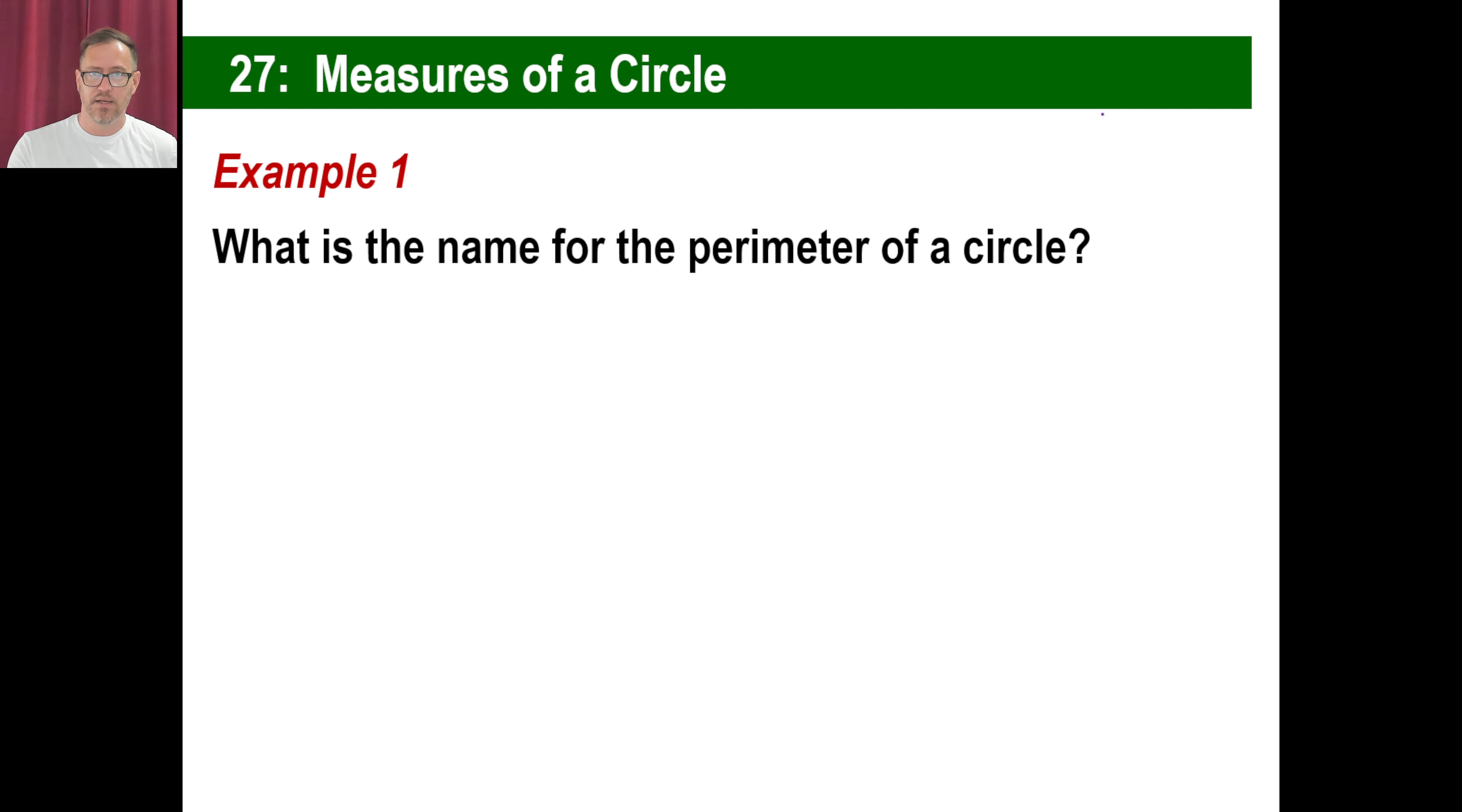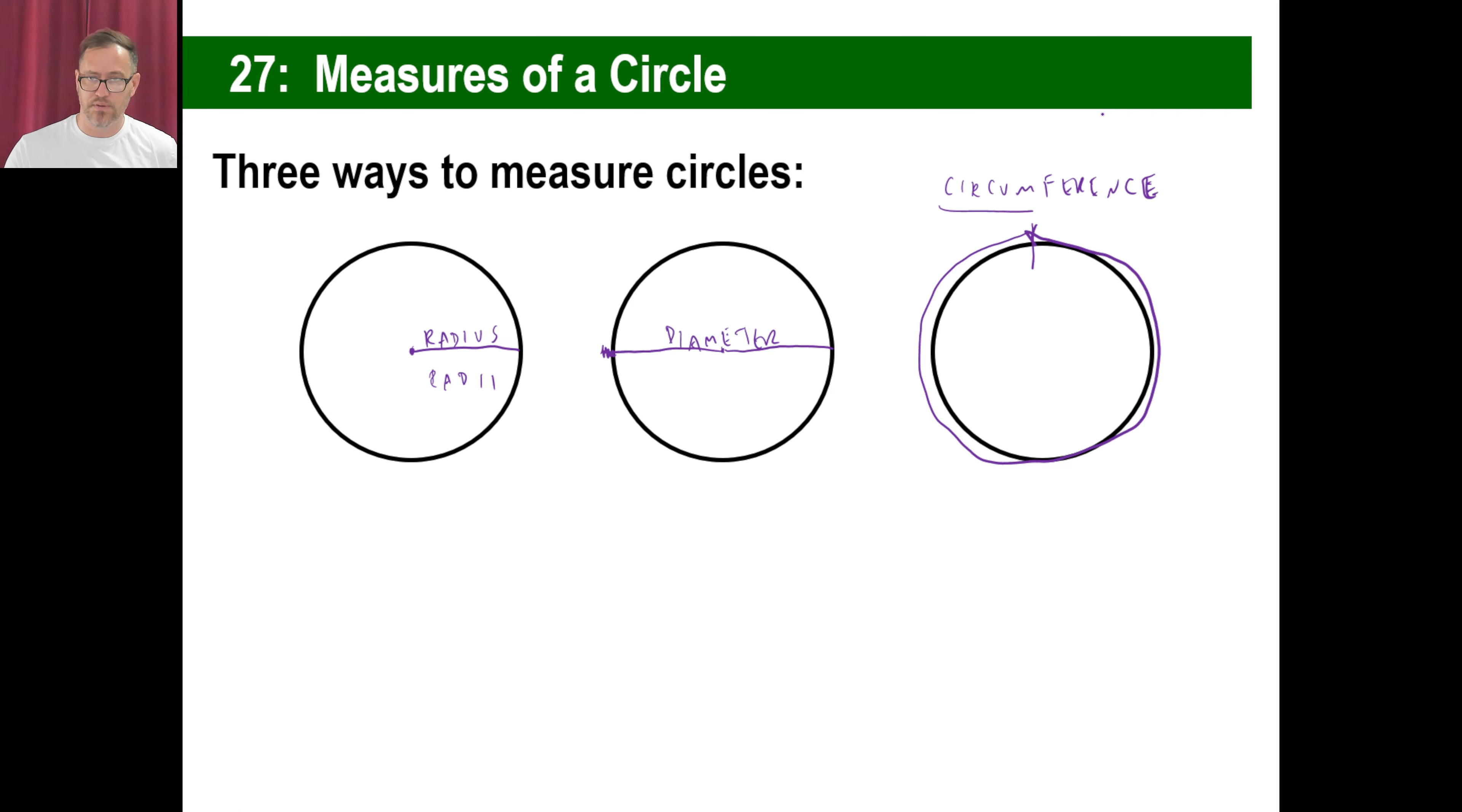What's the name for the perimeter of a circle? The perimeter of a circle, the distance around the circle, is called the circumference. There we go.